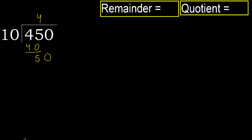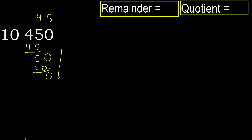Next: bring down to get 50. 10 multiply by 5 is 50 — ok, is not greater. Subtract: 50 minus 50 is 0. Next, there is no number, therefore finish.